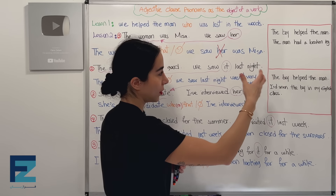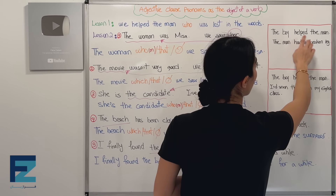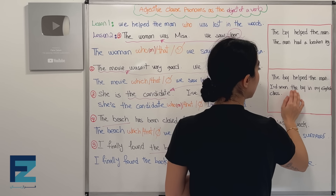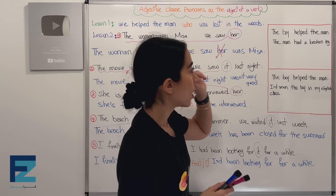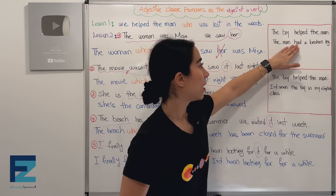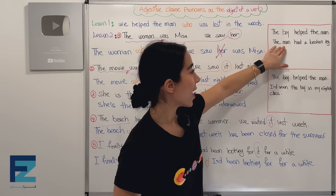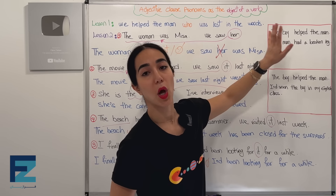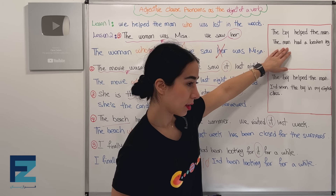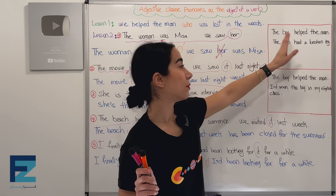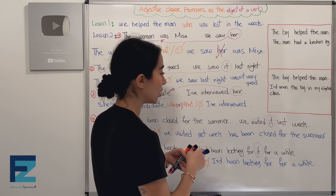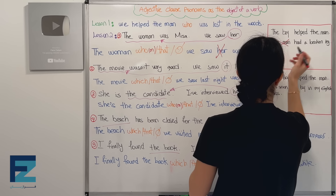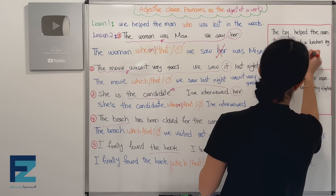Let's review lesson two. The boy helped the man — two sentences. First: the boy helped the man. Second: the man had a broken leg. Third: I'd seen the boy in my English class. The man had a broken leg — this second sentence describes 'the man.' The man is the subject of this sentence, so this is lesson one usage: the boy helped the man who had a broken leg — 'who' is used as the subject of the clause.